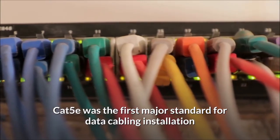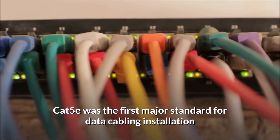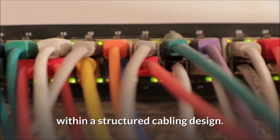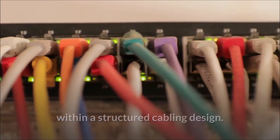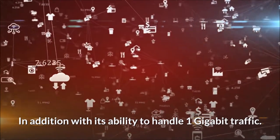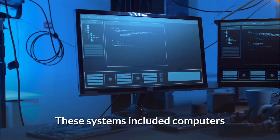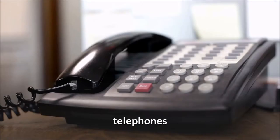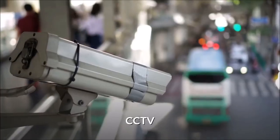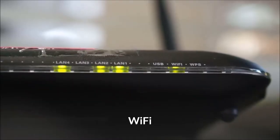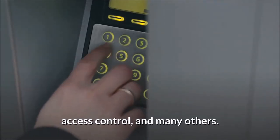Cat 5e was the first major standard for data cabling installation within a structured cabling design. In addition, with its ability to handle 1 Gigabit traffic, it was a suitable choice for various hardware uses. These systems included computers, telephones, CCTV, Wi-Fi, access control, and many others.